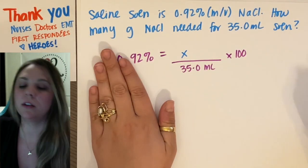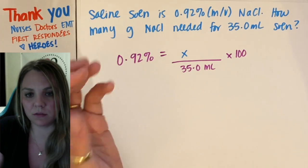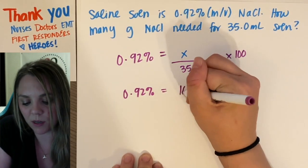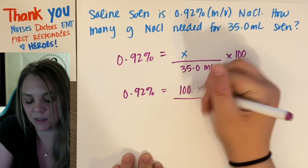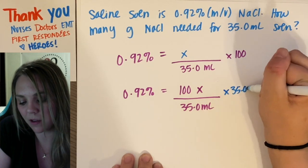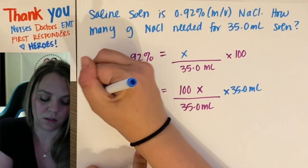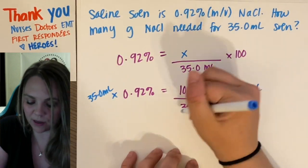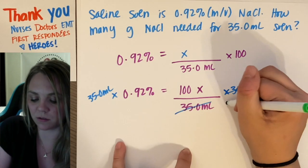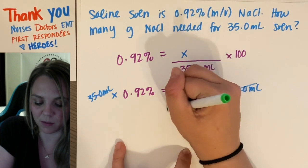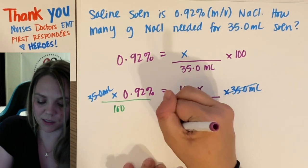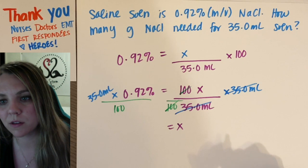So we're here and now you solve. So basically you can combine, so you would have 0.92 percent is 100x divided by 35.0 mils. So you can multiply by 35, you can solve for the equation any which way you like, depending on how comfortable you are with math. And then you would also divide by 100 on both sides.